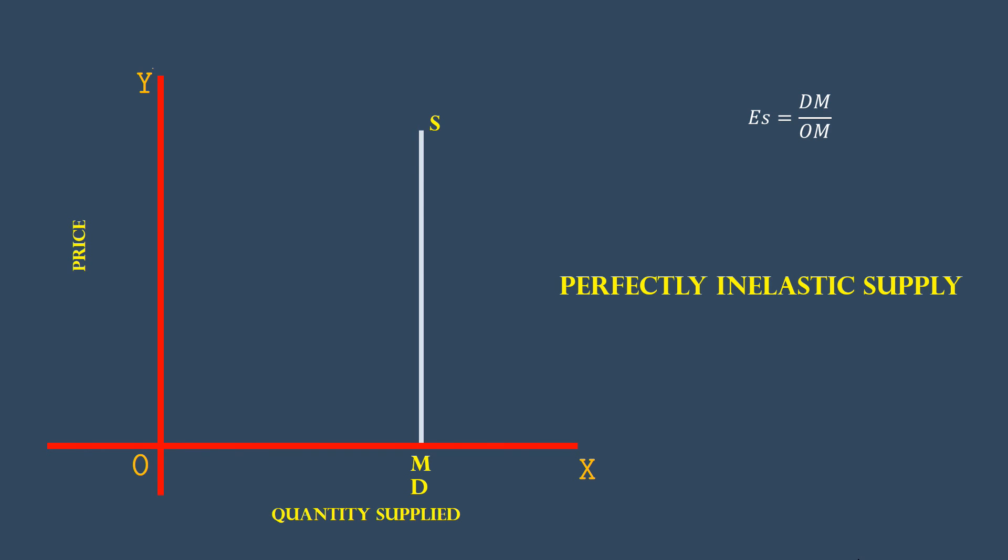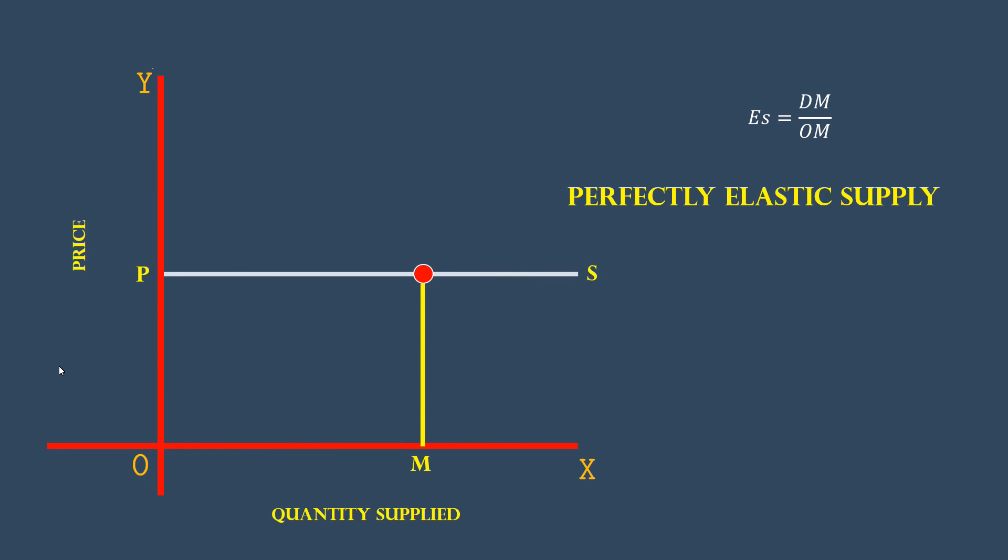It is a horizontal supply curve parallel to X-axis. Its point D is undefined. DM is infinite. OM is finite. In this case, DM over OM is infinite. Supply is perfectly elastic.